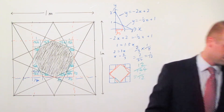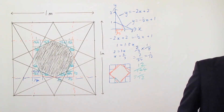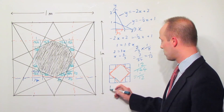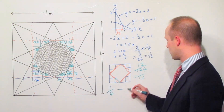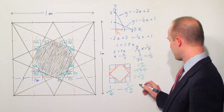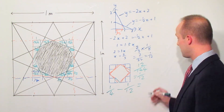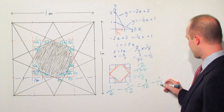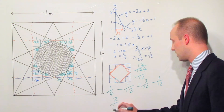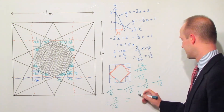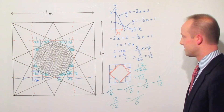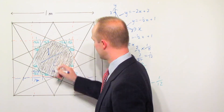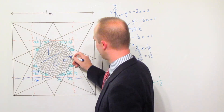So the calculation that we're doing — just double-checking my working — this entire inner square is one quarter. So you're going to do one quarter minus one twelfth. Putting these as equivalent fractions, that is three twelfths minus one twelfth, which comes out as two twelfths, which simplifies to one sixth. The area of the octagon in the middle is one sixth of a metre squared.